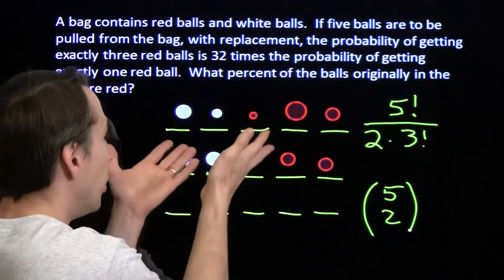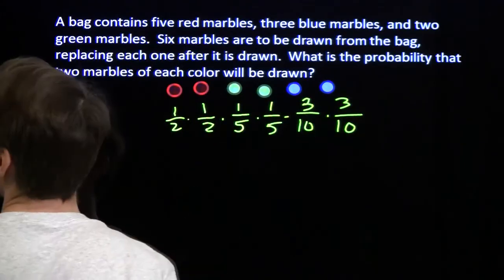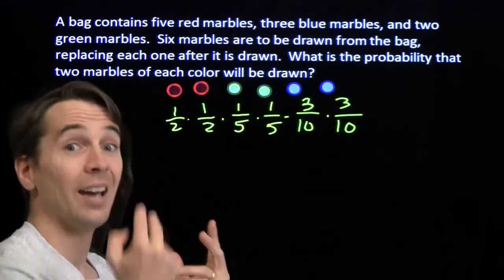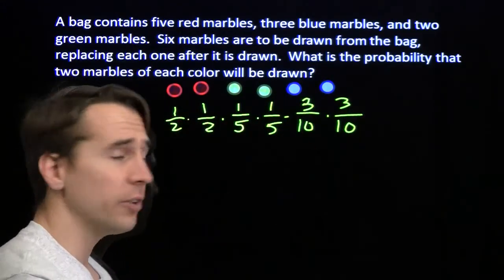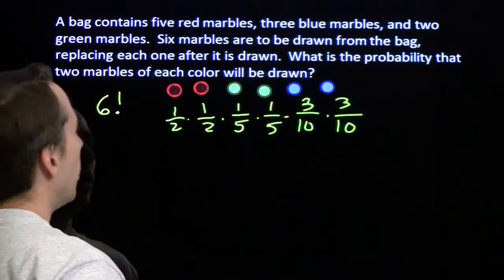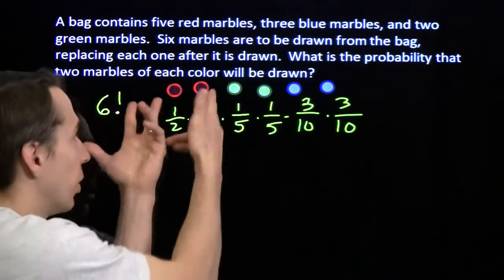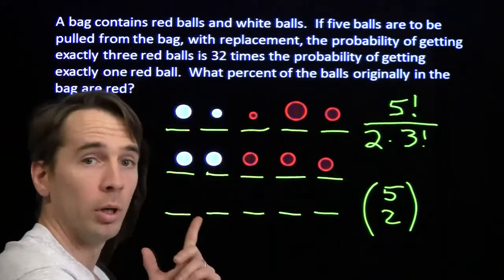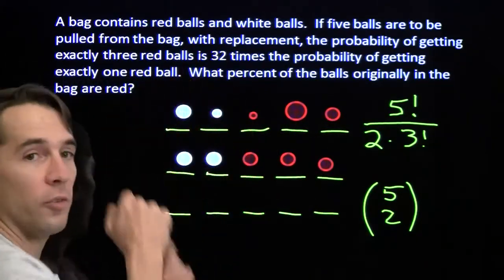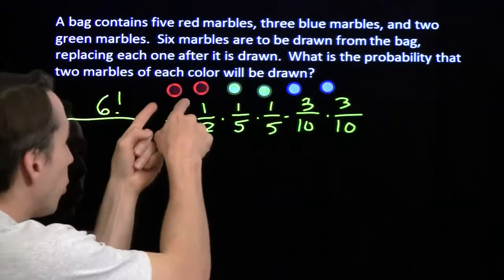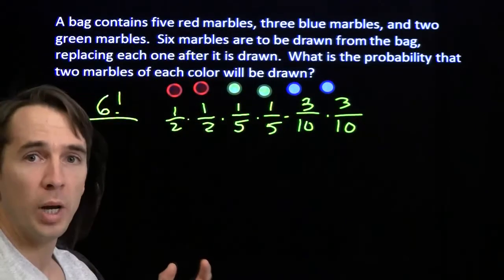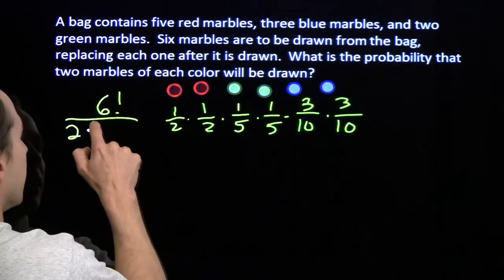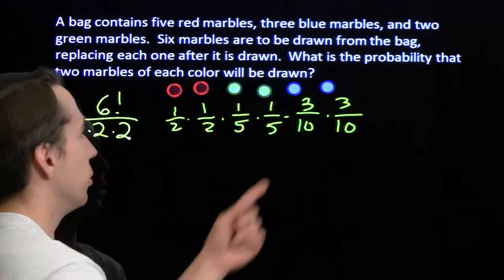Now we have a strategy for the marble problem. If we think of all 6 balls as different, that gives us 6! orderings. But we have to correct for the 2 identical reds — divide by 2. Then correct for the 2 identical greens — divide by another 2. Then correct for the 2 identical blues — divide by another 2. So the number of distinct arrangements is 6! divided by (2·2·2).